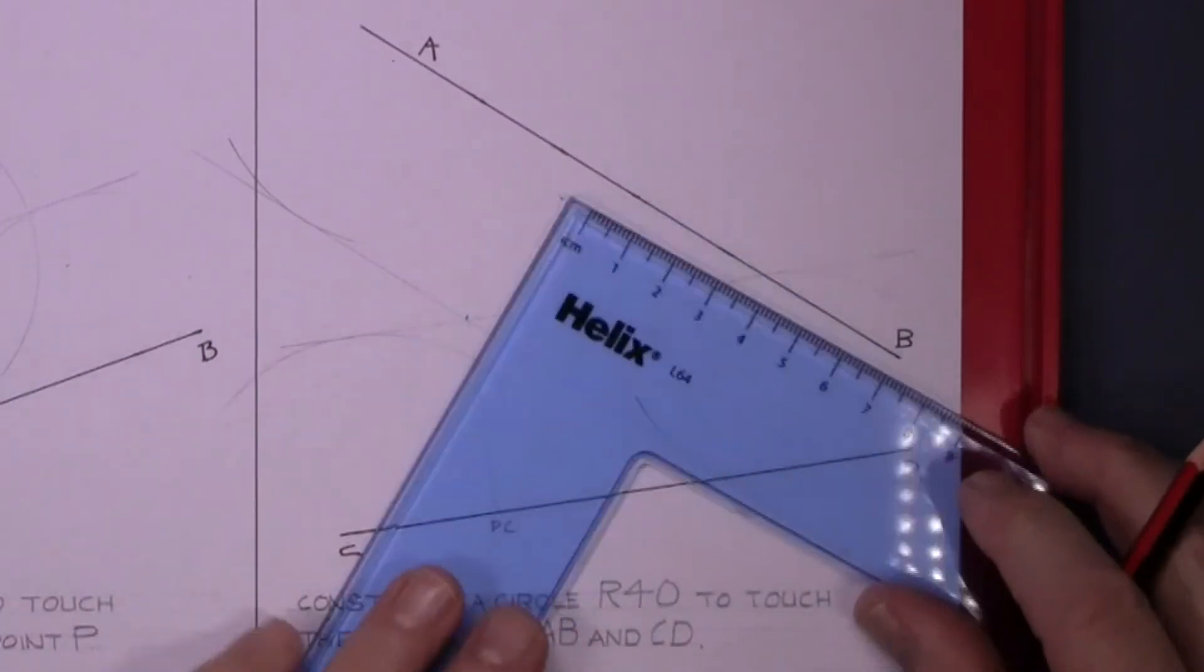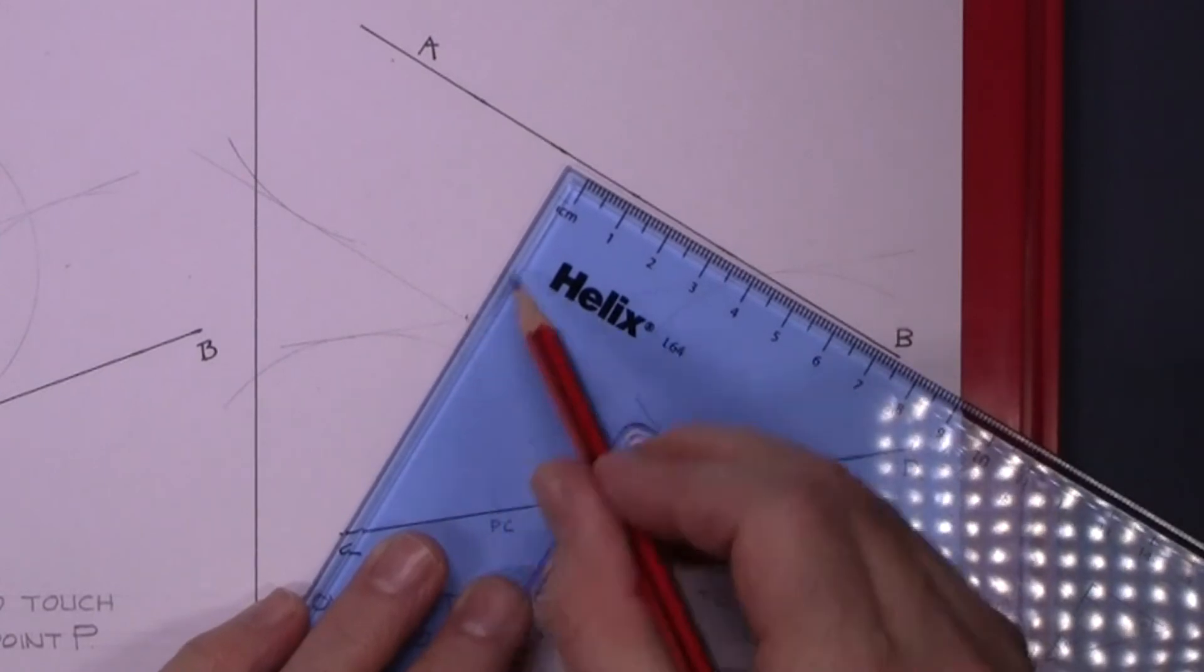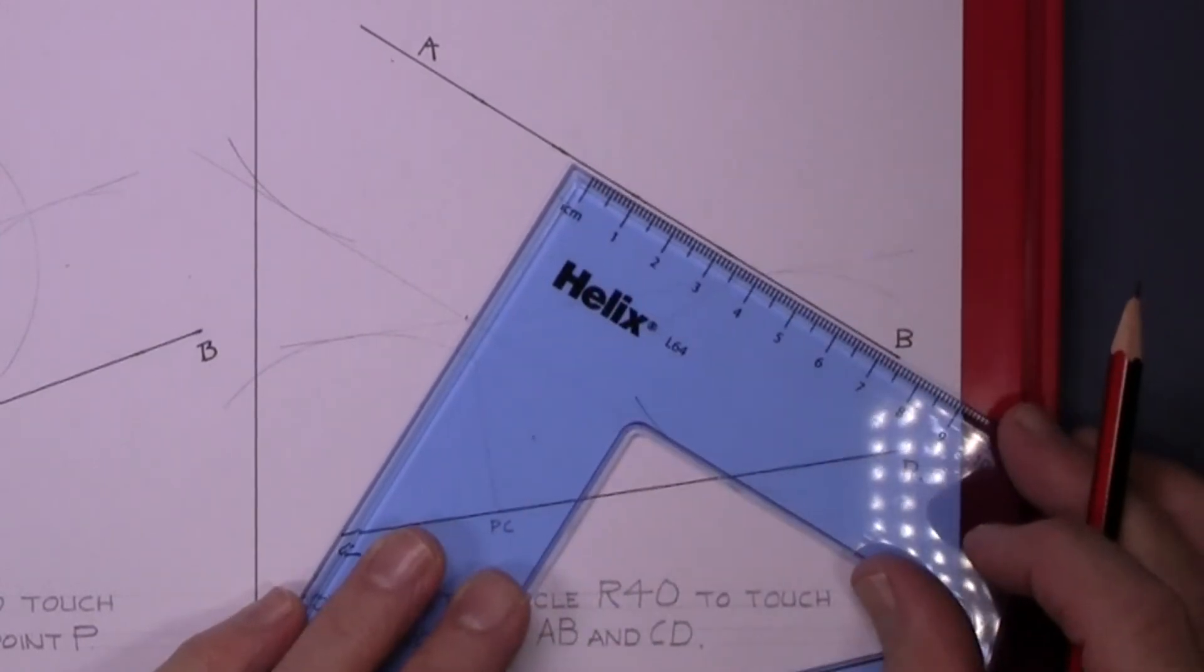We're going to do the same again now to AB from the center point, mark out at 90 degrees. That gets the point of contact again.